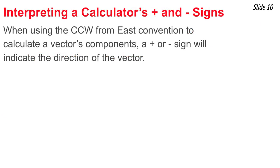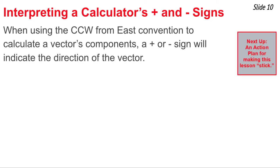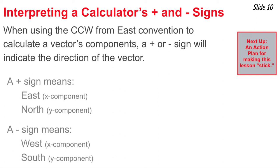When you use this shortcut equation, you end up with a plus or minus sign on your calculator when calculating the magnitude. Here's what those signs mean: when calculating an x component using the cosine, a positive sign means the direction is east and a negative sign indicates the direction is west. When calculating the y component using the sine function, a positive sign indicates the component is directed north, and a negative sign indicates the component is directed south.